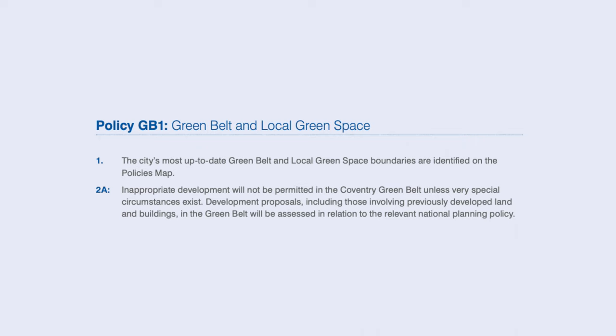Importantly, I would bring in the Greenbelt policy — because most likely if it's around Coventry or around a lot of big cities, if you've got a brownfield site out in the countryside, it's not necessarily going to be open countryside policy, it will be Greenbelt policy. In Coventry, policy GB1 essentially sets out that they will follow national planning policy in the context of the Greenbelt, which relates to doing no harm or no increased harm or not negatively affecting the openness of the Greenbelt.